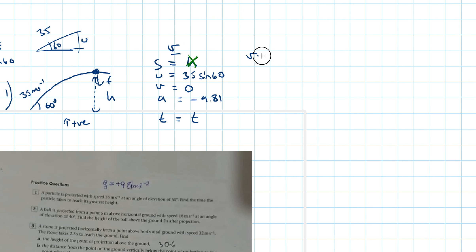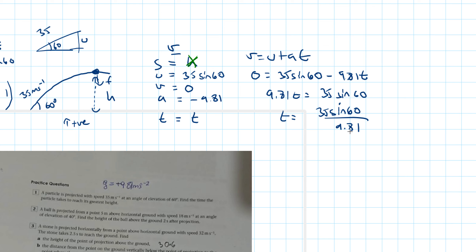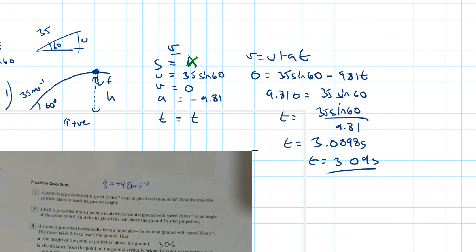Using v equals u plus at and substituting values: 0 equals 35 sine 60 minus 9.81t. Rearranging: 9.81t equals 35 sine 60, so t equals 35 sine 60 divided by 9.81. Calculating gives t equals 3.0898 seconds, which to three significant figures is 3.09 seconds. That is the answer for question one.